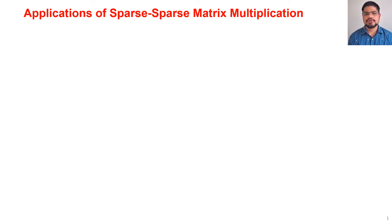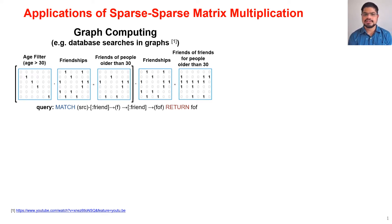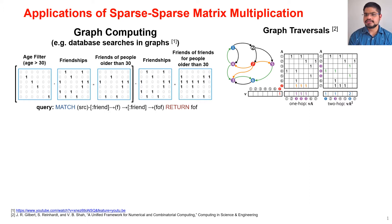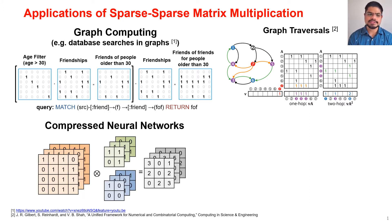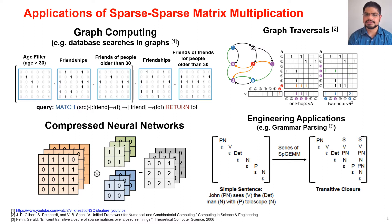There are numerous applications of sparse-sparse matrix multiplication, such as in graph databases. For example, a query finding friends of friends of people whose age is greater than 30 can be performed by doing a series of sparse-sparse matrix multiplies. Similarly, graph traversal algorithms, sparse compressed neural networks, and emerging applications such as grammar parsing can all be accomplished using sparse-sparse MM.